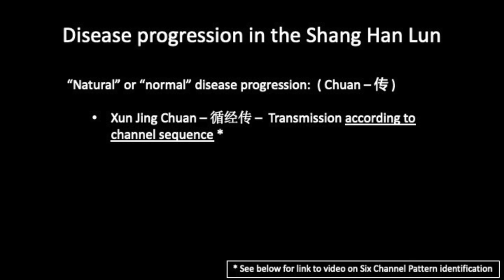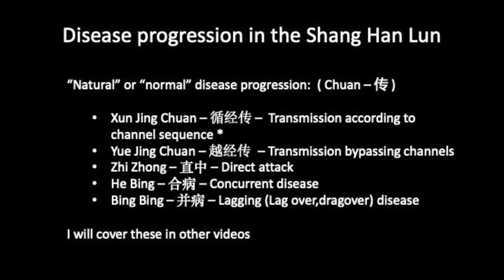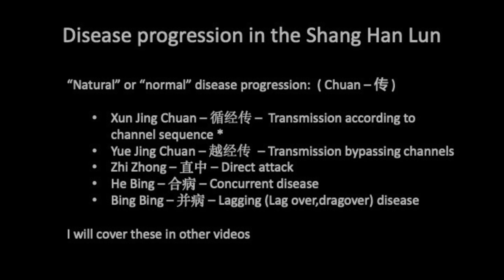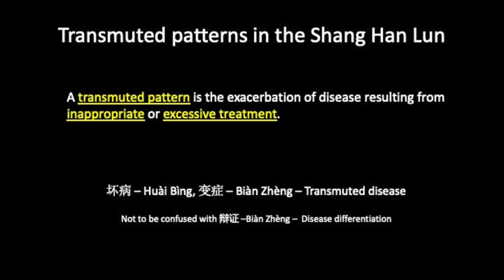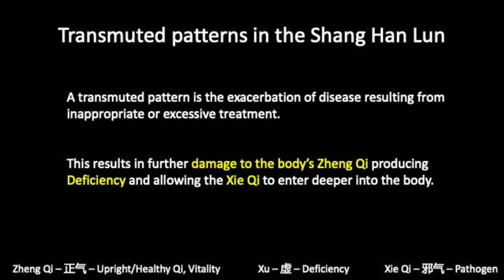In my original video on six-channel pattern identification, I only presented the simplest form of disease progression — that is, progression according to the channel sequence. This slide lists other forms of natural disease progression also presented in the text, which I will discuss in another video. The Shang Han Lun further adds the concept of a transmuted disease, resulting from incorrect diagnosis or excessive treatment that produces a new set of signs and symptoms, further damaging the body's Zheng Qi and allowing Xie Qi to enter deeper into the body.